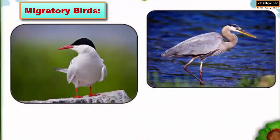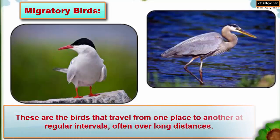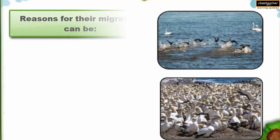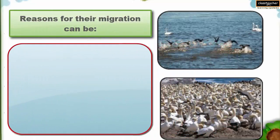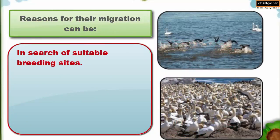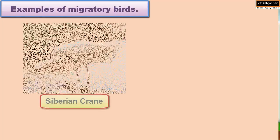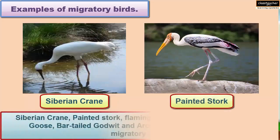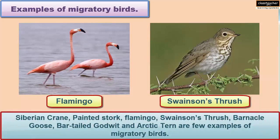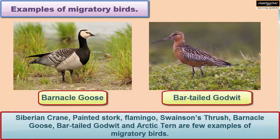Migratory Birds: These are the birds that travel from one place to another at regular intervals, often over long distances. Reasons for their migration can be: in search of suitable breeding sites, in search of food and water, to escape bad weather, or to avoid environmental threats. Siberian Crane, Painted Stork, Flamingo, Swainson's Thrush, Barnacle Goose, Bar-tailed Godwit, and Arctic Tern are a few examples of migratory birds.